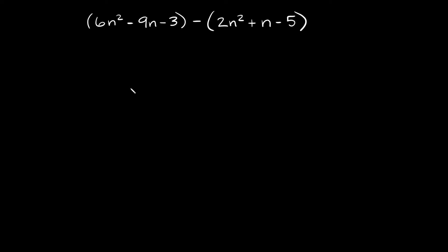What's up you freaking geniuses? In this video I'm going to teach you how to subtract polynomials and combine like terms. We have the problem in parentheses 6n squared minus 9n minus 3, and then minus this other thing in parentheses 2n squared plus n minus 5.